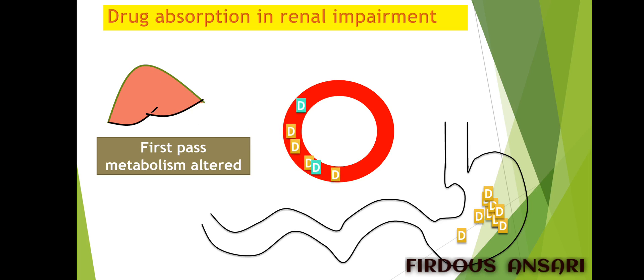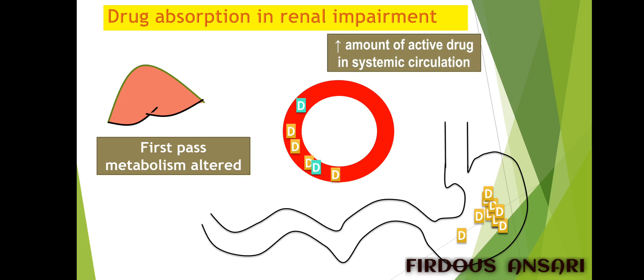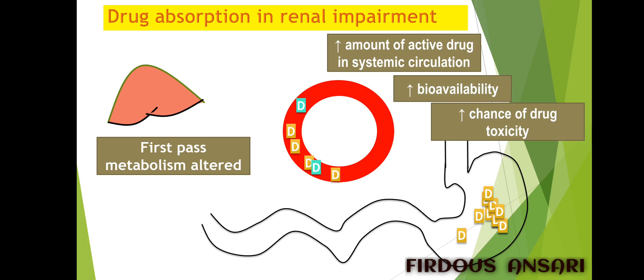Because first pass metabolism is altered, only few drugs are metabolized and most drugs remain in active form. This results in an increased amount of active drug in systemic circulation, thereby increased bioavailability and increased chance of drug toxicity. The main role of the liver is to convert lipid-soluble drugs into water-soluble drugs so they can be eliminated via the renal route, and to convert active drug into inactive drug. Failure of the liver to do so causes large amounts of active drug to enter systemic circulation, increasing bioavailability and the chances of drug toxicity.